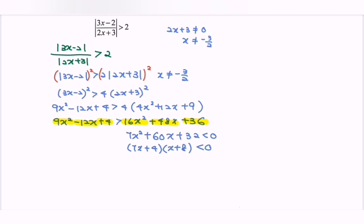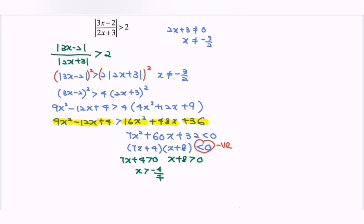Since we have the simplest form, we decide it is less than 0, which means we want the negative. Do you remember? Always assume positive. So 7x plus 4 greater than 0, and x plus 8 greater than 0. So x will be greater than negative 4 over 7, and x will be greater than negative 8.